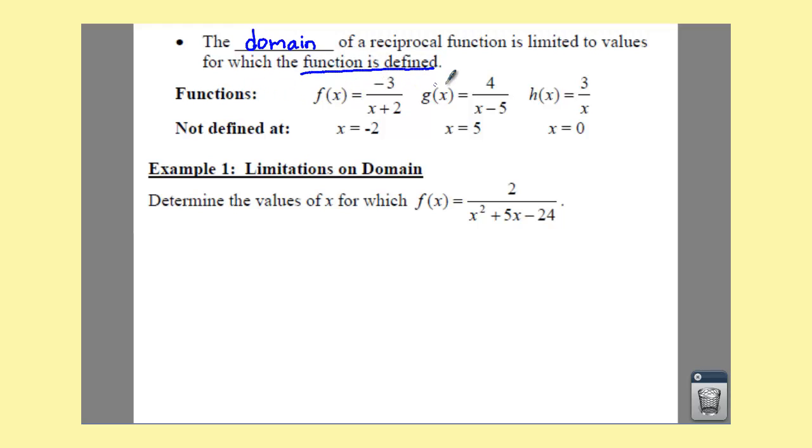So, if we have these functions right here, f of x, g of x, h of x, and notice your, each of your numerators don't have any x's in them, but your denominators all do. So, in order to find out where it's undefined, what you do is you just set x plus 2 equal to 0, solve it, you get x equals negative 2.